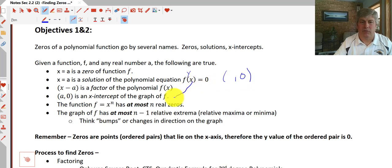And that leads directly to the one that's two down here. That x minus a is a factor of the polynomial f(x). We'll use this quite a bit. And (a, 0) is an x-intercept of the graph. A couple important things here in these last two bullet points. The function f equals x to the n has at most n real zeros. So that's an important thing to understand that a cubic or something to the fourth power has at most three zeros or four zeros. You can't have any more than that.